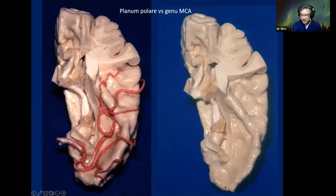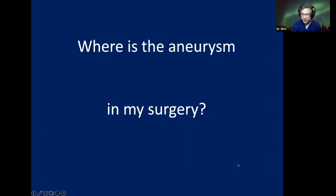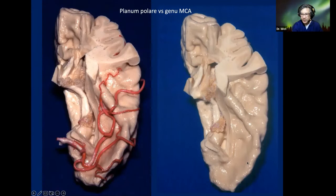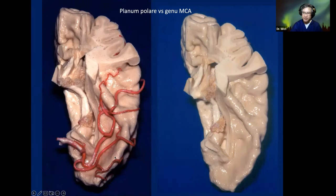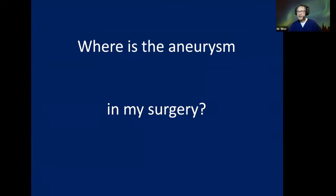Any aneurysm from the genu pointing laterally will always be attached to the planum polare. Will you see it when you start splitting the Sylvian fissure? No — because of the surgical position, this kind of aneurysm will be hidden by the vertical portion of planum polare. But just by looking at the angiography, you already know where the aneurysm is located.